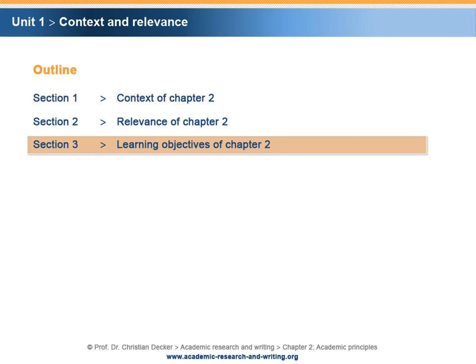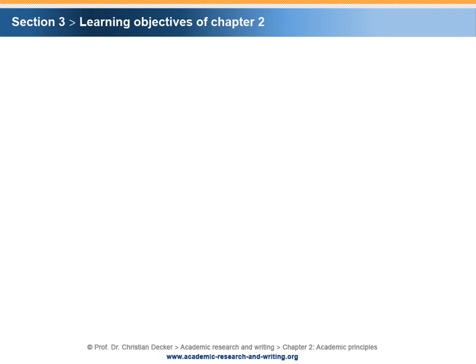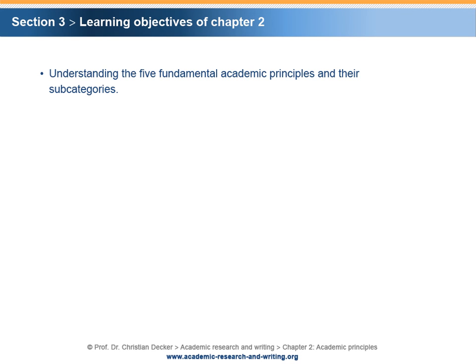Section 3 – Learning Objectives of Chapter 2. There is only one learning objective for this chapter. After this chapter, you should have an understanding of the five fundamental academic principles and their subcategories.